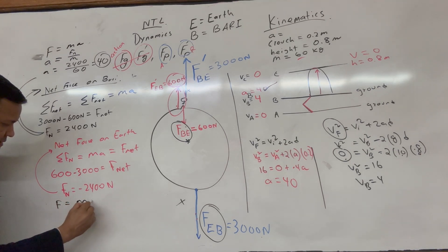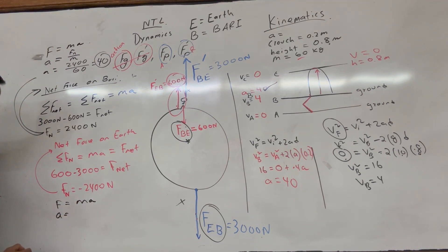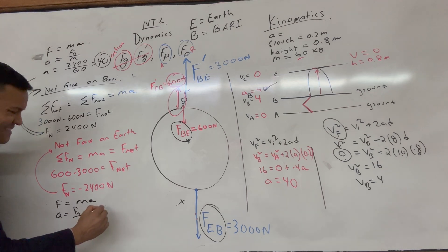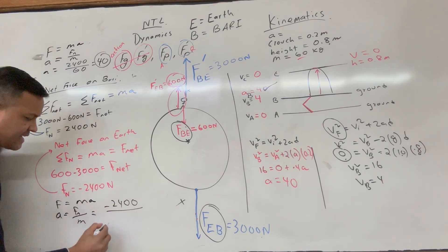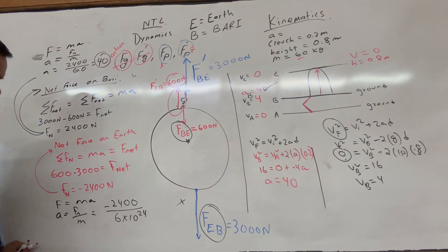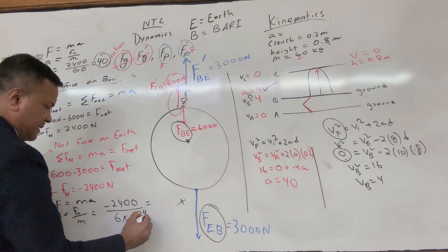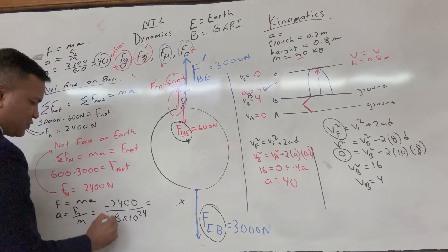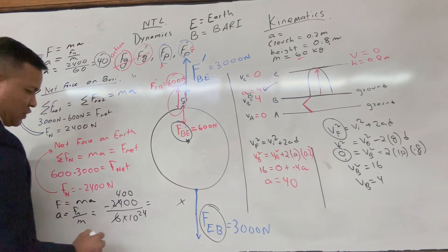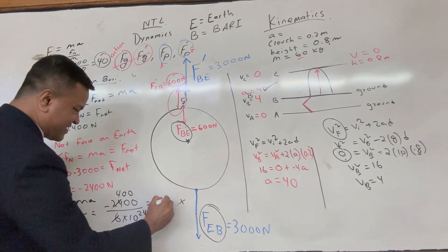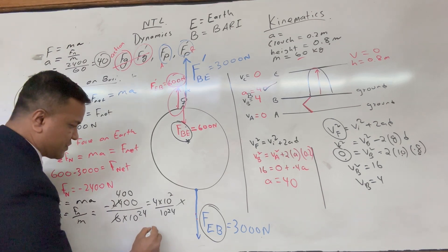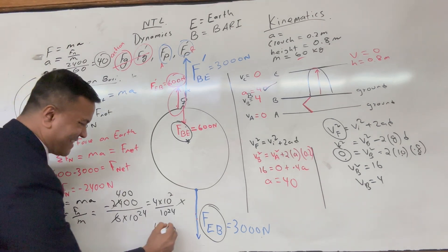The acceleration of Earth equals F_net over M_earth. F_net is negative 2400 N and M_earth is 6×10²⁴ kg. So acceleration of Earth = 2400 / (6×10²⁴) = 4×10² / 10²⁴ = 4×10⁻²² m/s². This is essentially negligible.